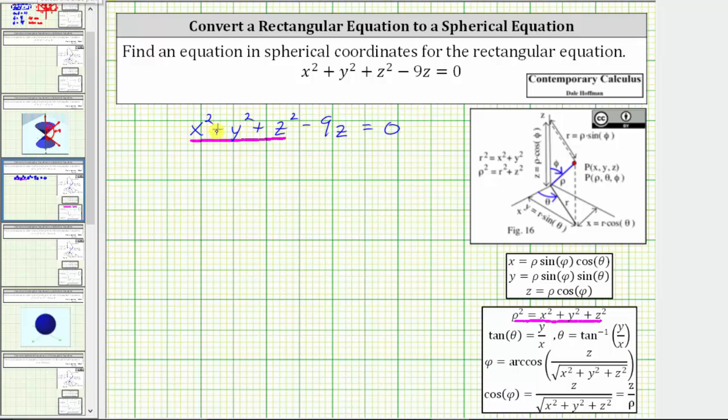Performing the substitution gives us rho squared minus nine times z, but notice z is equal to rho cosine phi. Performing this substitution gives us rho squared minus nine rho cosine phi equals zero.